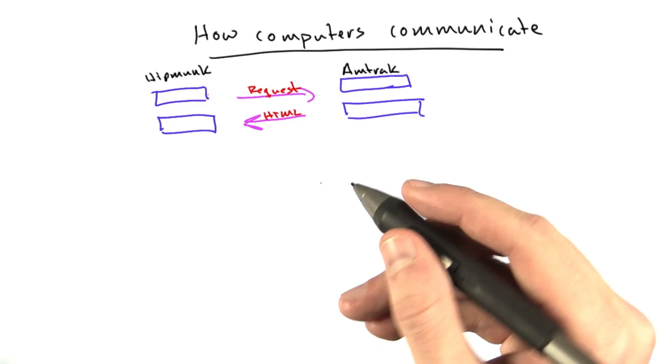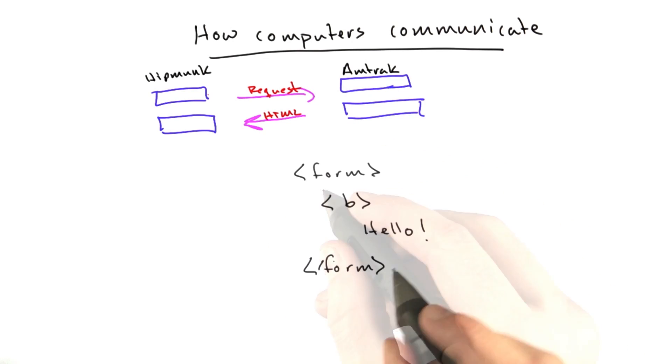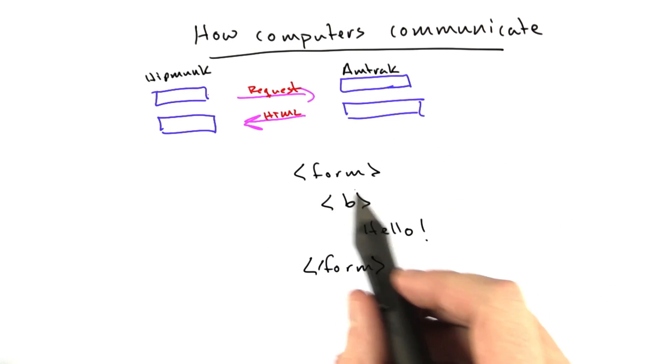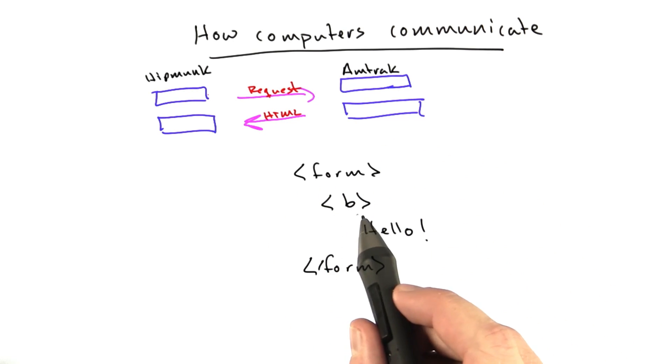Browsers are very forgiving. You can write HTML that looks something like this, where you have an opening form tag and an opening B tag to make some text bold, and then you can forget to put the closing B tag, put your closing form tag, and the browser will probably actually render it appropriately.